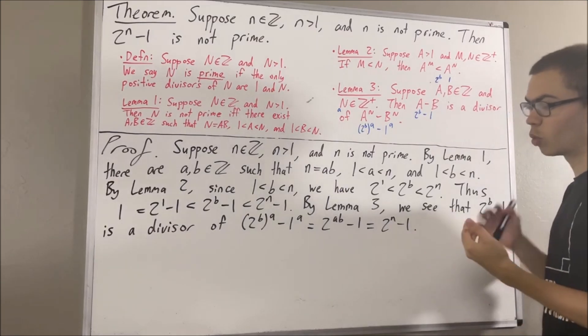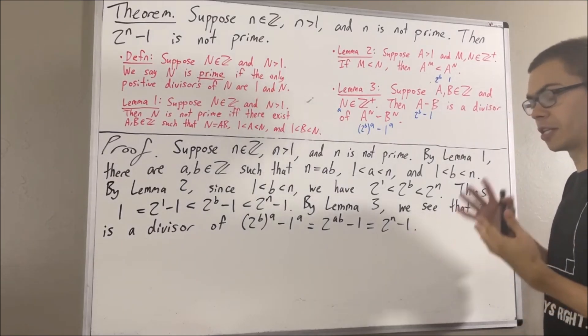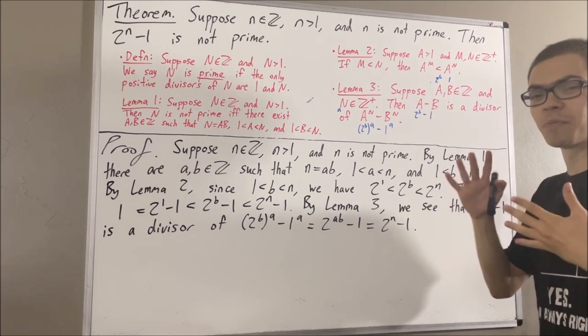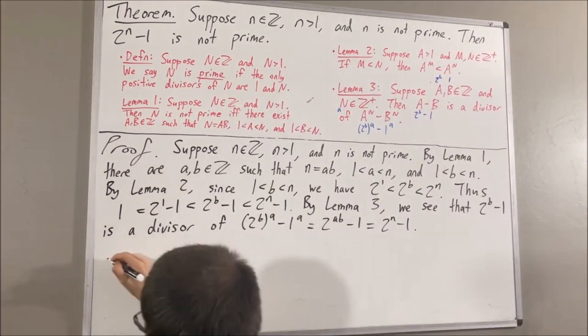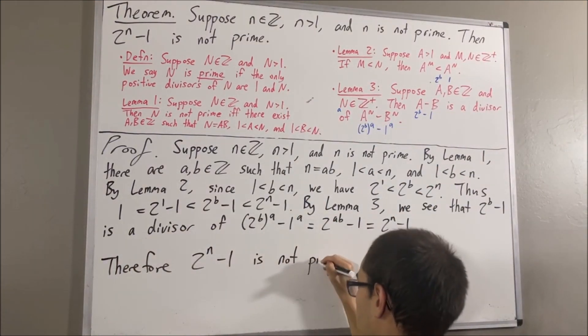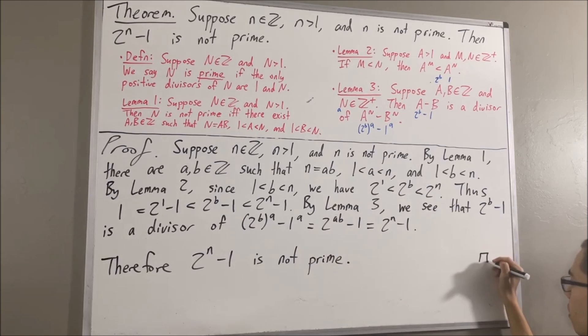And that's exactly what we wanted to show, to show that 2 to the power of n minus 1 is not prime. So, this completes the proof.